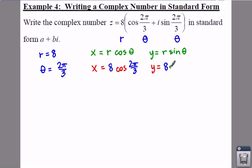These are kind of like our horizontal vertical components that we did back in 6-3. 8 sine of theta, and your theta is 2π over 3.